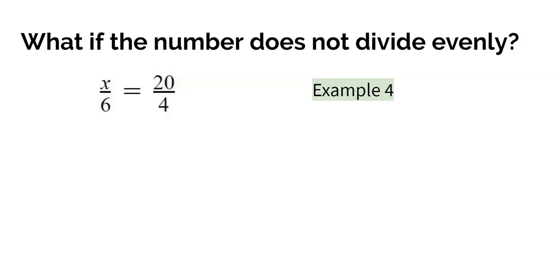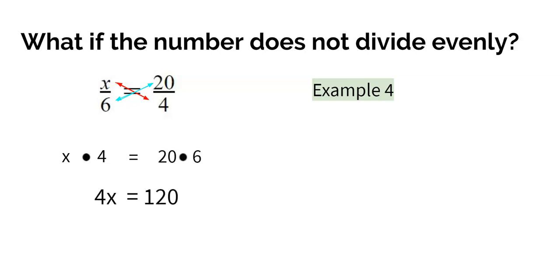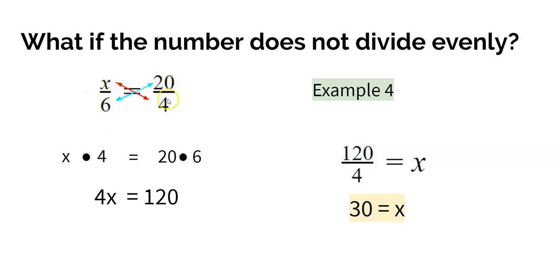Let's look at another example: x over 6 is equal to 20 over 4. Multiplying diagonally gives x times 4 equals 6 times 20. Make sure you always include the equal sign. That gives us 4x equals 120. To isolate x, divide both sides by 4, so x is equal to 30. Substituting back: 30 divided by 6 equals 5, and 4 goes into 20 equals 5, so both fractions are equal.